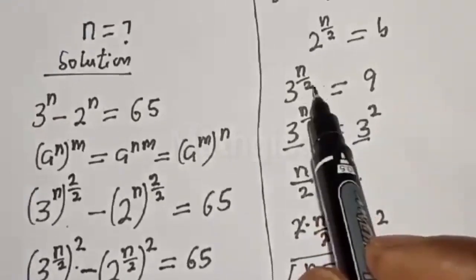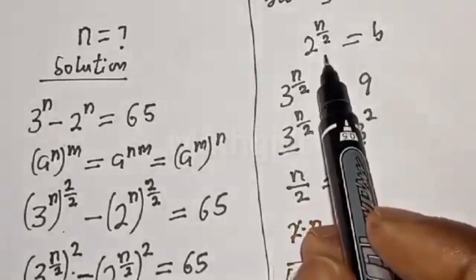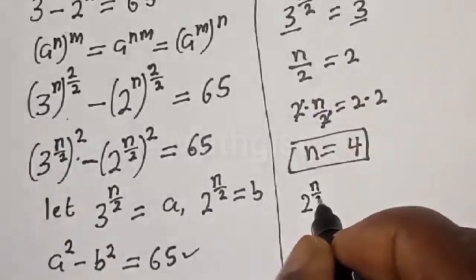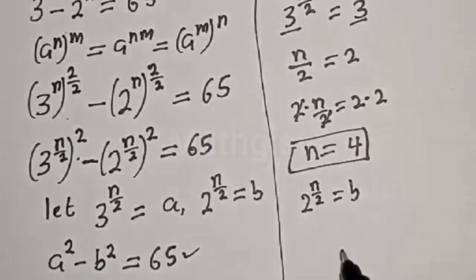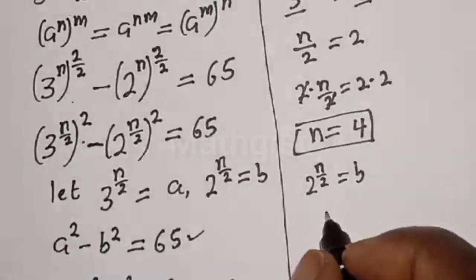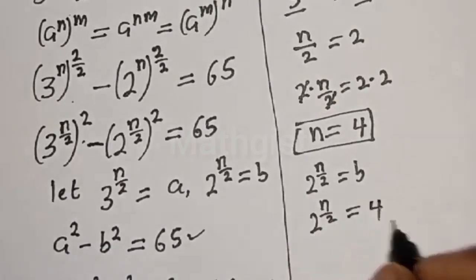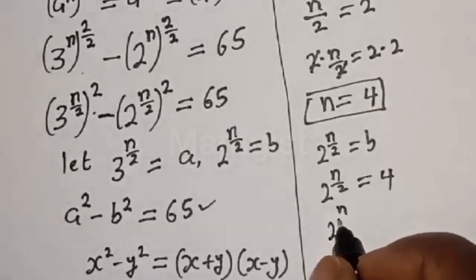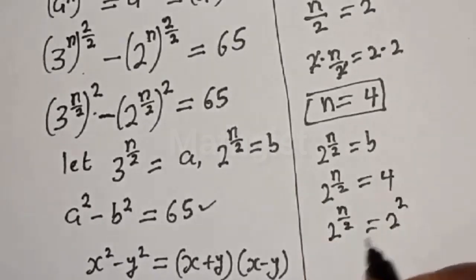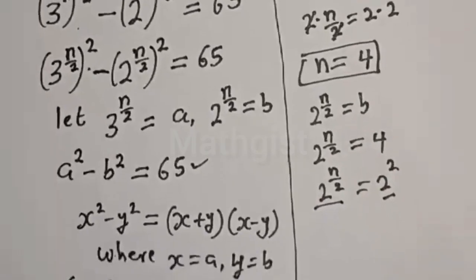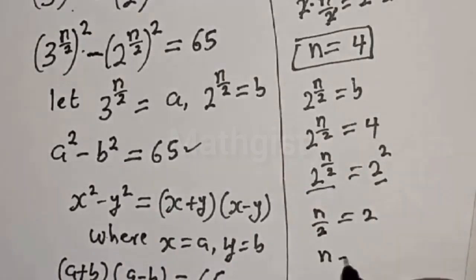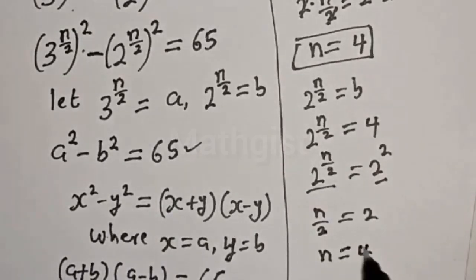Let's also check using the second substitution: 2 raised to power n over 2 equals B equals 4. So 2 raised to power n over 2 equals 4, which equals 2 squared. By the same base rule, n over 2 equals 2, giving N equal to 4. This confirms our answer is correct.